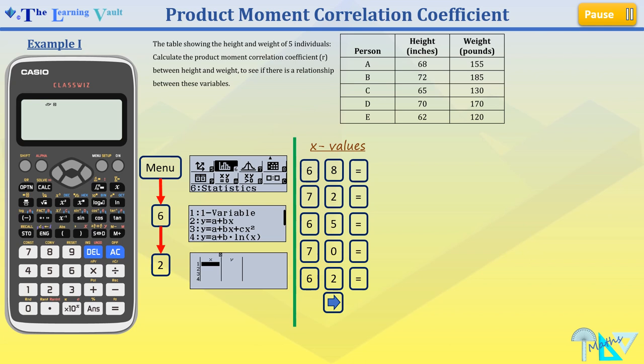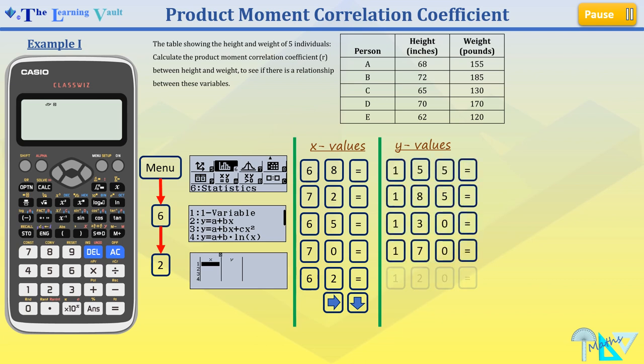Now we press our east key and south key to go on to the next column in the calculator. Now we're going to enter our y values, which are displayed as we go along.